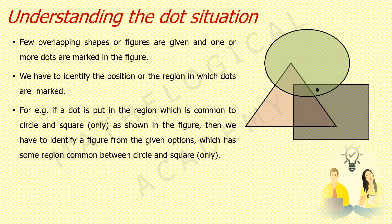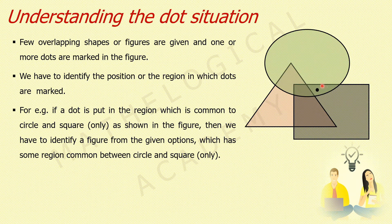For example, if a dot is put in the region which is common to circle and square only, as shown in the figure here, then we have to identify a figure from the given options which has some region common between circle and square only. That region which lies in circle and square only should not be lying in the triangle.